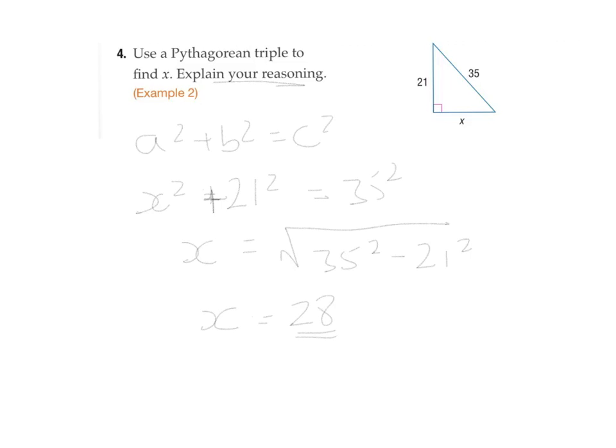Alright, being as 28 is a whole number, you've proved that it's a Pythagorean triple. So 21, 28, and 35 is, yes, it is.